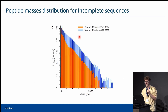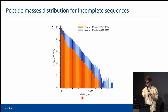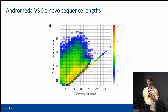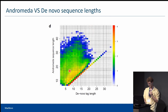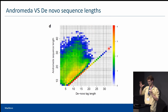We also checked the mass distribution for incomplete sequences, and since this is on a log scale, it is unsurprising that the majority of incomplete sequences gather in the low mass region. The plot of Andromeda versus MaxNova sequence length shows a cloud of incomplete sequences where Andromeda found higher sequence lengths compared to MaxNova, but there is good correlation on the diagonal corresponding to sequences that agree between Andromeda and MaxNova.